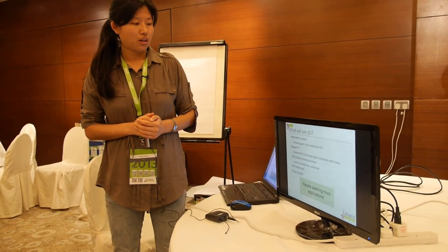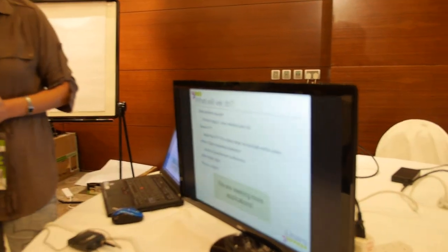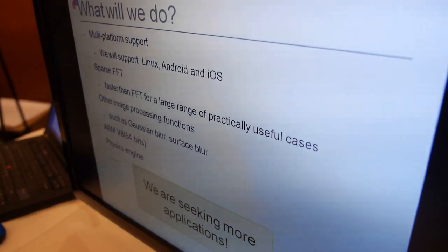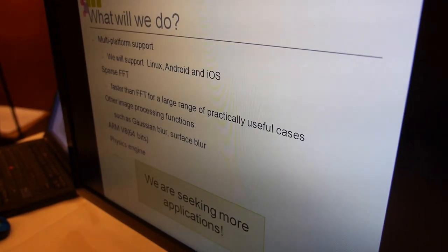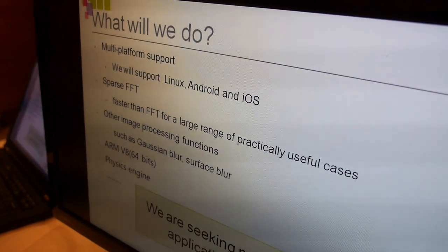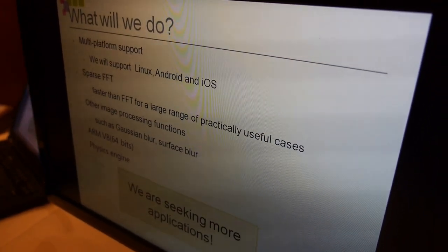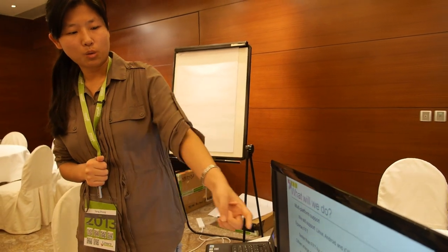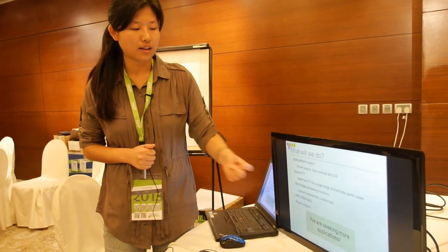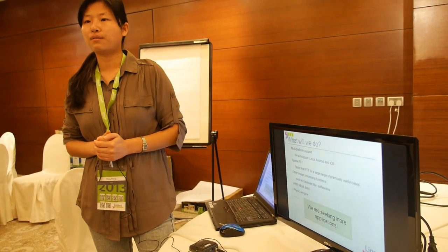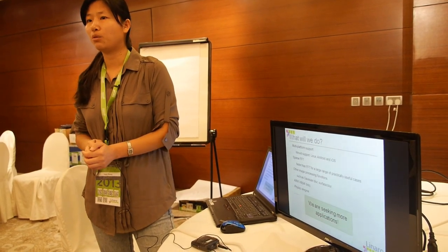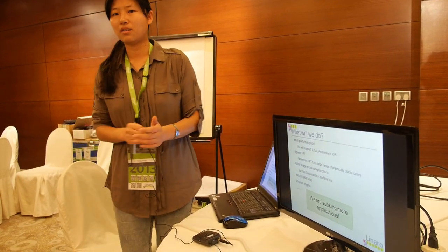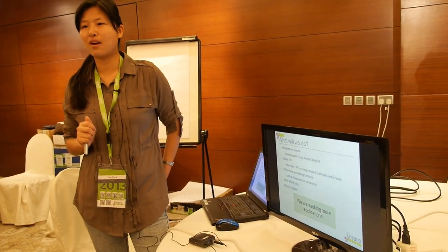What will we do in the future? According to our plan, we will support Linux, Android, and iOS. For Q2, we will also develop Sparse FFT. You may not be familiar with Sparse FFT — it is a new algorithm introduced in 2012 that is faster than FFT for a large range of practical use cases. We will also develop other image processing functions such as Gaussian blur and surface blur, which are used for photograph processing on the mobile platform.